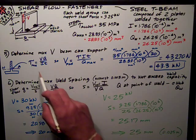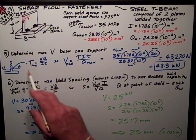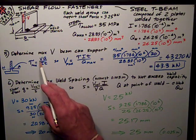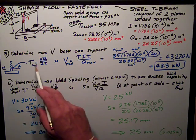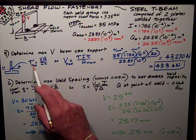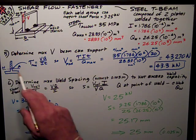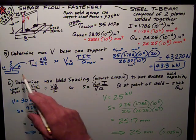The formula is tau_max equals VQ over IT, or any tau equals to that. The maximum shear stress is at the neutral axis, so I've kind of sketched that in for you.